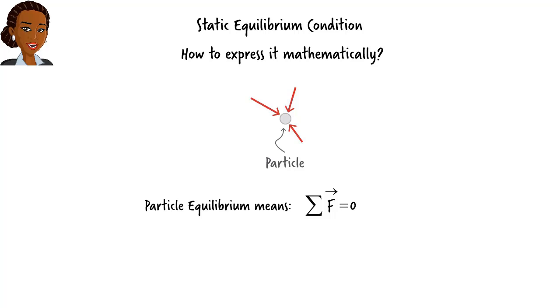In two-dimensional space, where vectors are described in terms of their x and y components, we can write this vector equation in terms of two equations, like this. We call these static equilibrium equations.